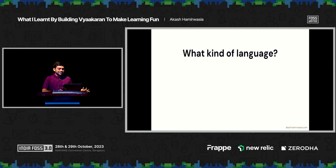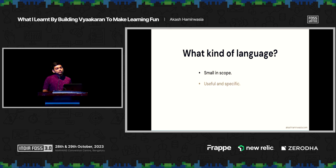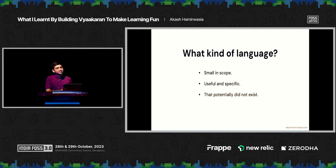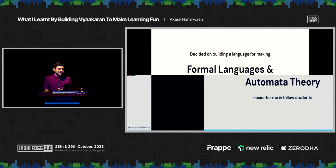What kind of language should I build? Since this was my first time building a programming language, I wanted to build something very small in scope. I didn't want to build yet another general purpose, high level programming language. It should be small in scope, potentially useful, it should solve some personal pain point to keep me motivated, and it should be something that potentially did not exist. When you try to build something new, it excites you and motivates you. After a lot of deliberation, I decided to build a language for making formal languages and automata theory easier for me and fellow students to understand.